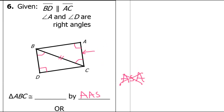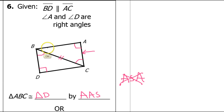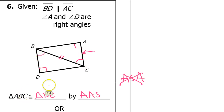The congruence statement: triangle ABC is congruent to triangle what? Clearly A corresponds with D. Be careful about B — angle B of the top triangle corresponds with angle C of the bottom triangle, because angle C of the top triangle is marked congruent with angle B of the bottom triangle. So don't think that B is going to automatically correspond with B — in this case it does not.